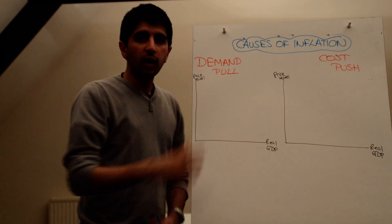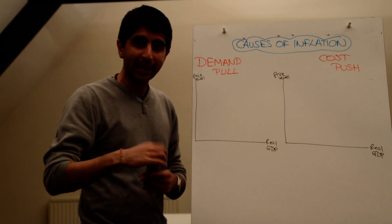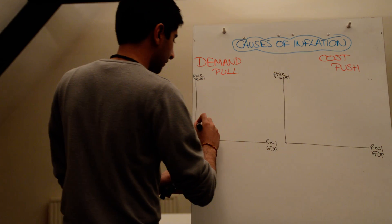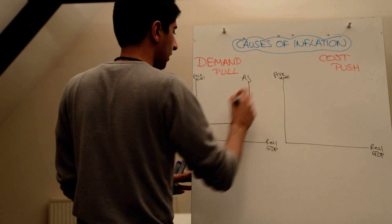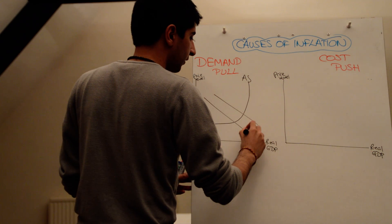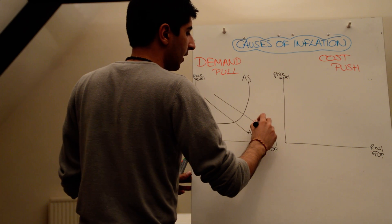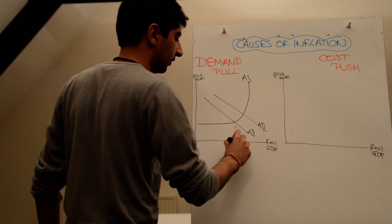Demand pull inflation occurs when there is an increase in aggregate demand in the economy. On a diagram, that looks something like this. So you've got your aggregate supply, and for some reason, for a whole host of reasons, aggregate demand has shifted to the left, let's say.